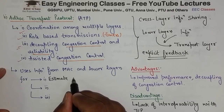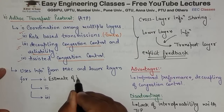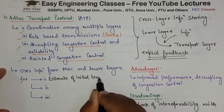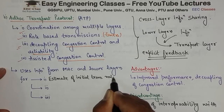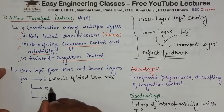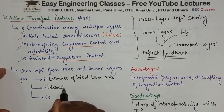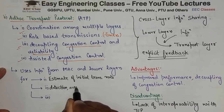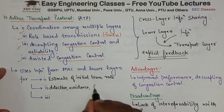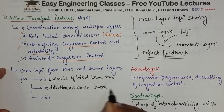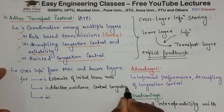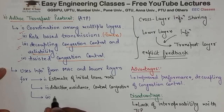The estimate of initial transmission rate is determined. The second aspect is detection and control of congestion, and the next aspect is detection, avoidance, and control of congestion — so these three things are found out using information from the lower layers.